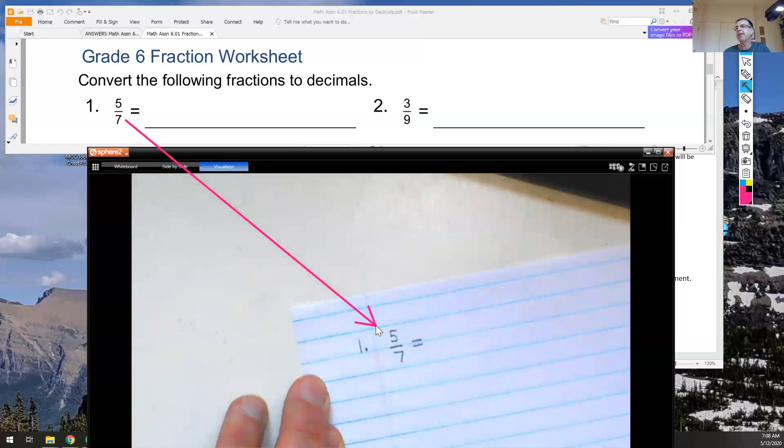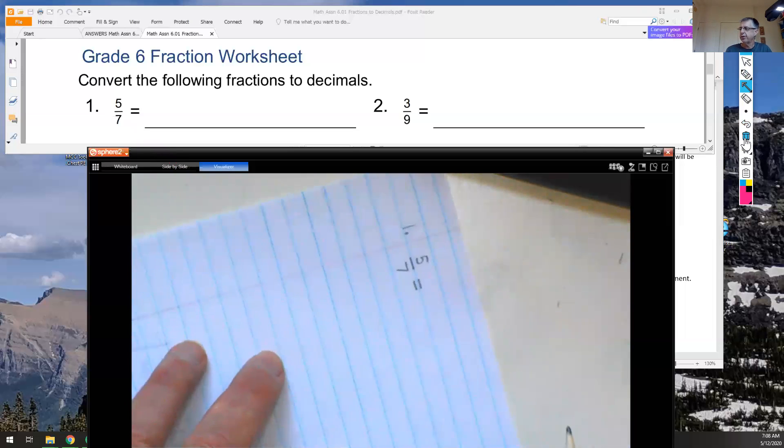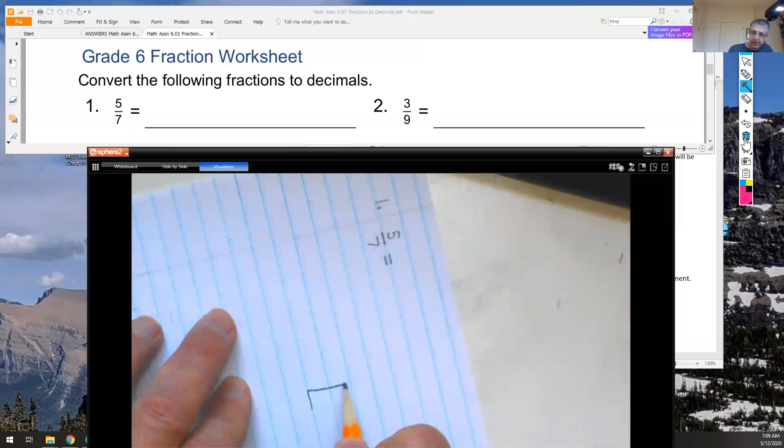Then I'm going to be turning that 5 sevenths into a decimal. And as you remember in the videos, that's going to be done by dividing. So it's important to show your work to show how you got that answer. I'll turn my paper sideways and draw a dividing box to get myself ready.